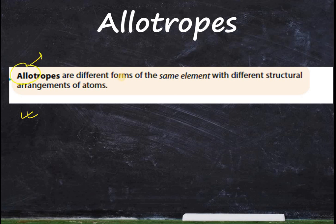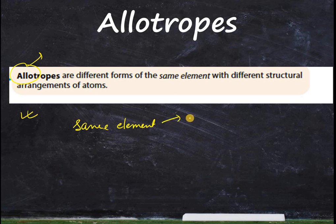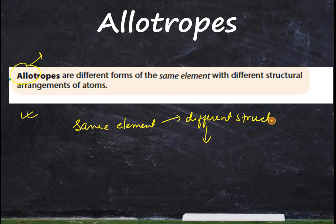So you will see different forms of the same element — the element is the same, but within that same element they are different because they have different structural arrangements of atoms. Because of this different structure, they are completely different forms and will have different properties.